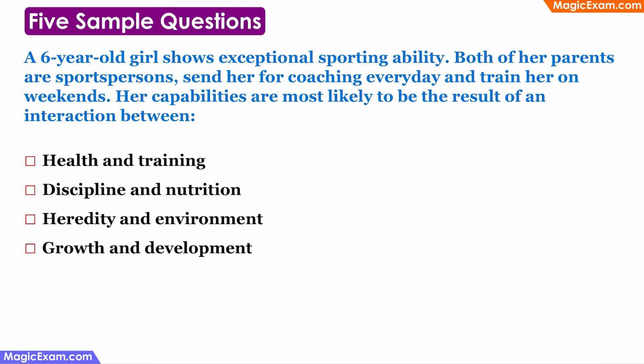Moving on to the questions. The first question asks: a six-year-old girl shows exceptional sporting ability; both her parents are sports persons and they send her for coaching every day and train her on weekends — her capabilities are most likely the result of an interaction between which two factors? Since both parents are sports persons, the athletic ability is likely due to heredity. But heredity alone does not guarantee growth and development — environmental factors are also very important. Therefore, the correct answer is heredity and environment.